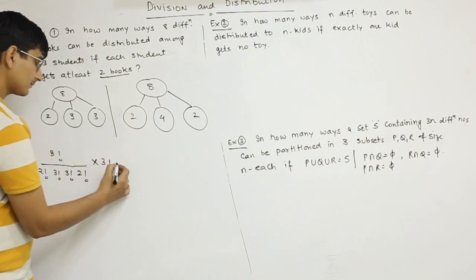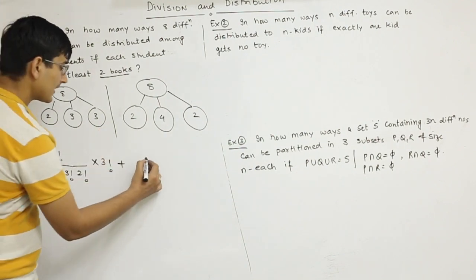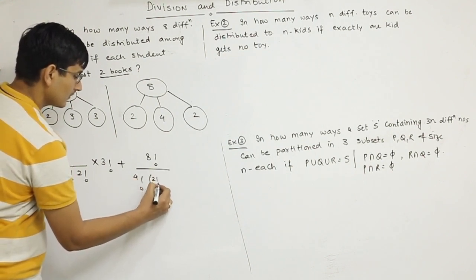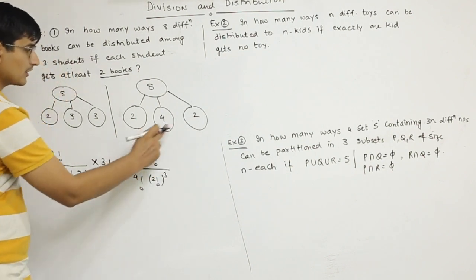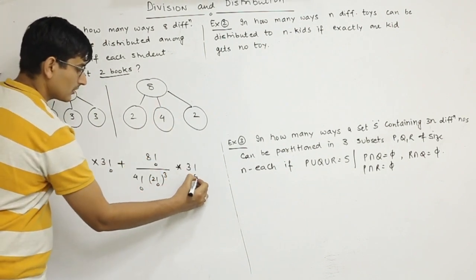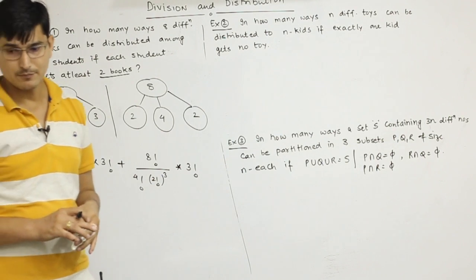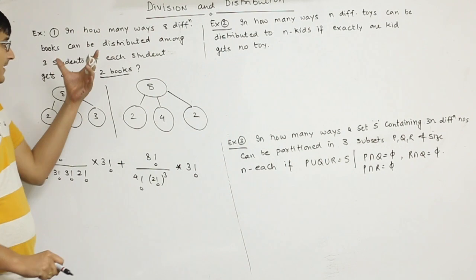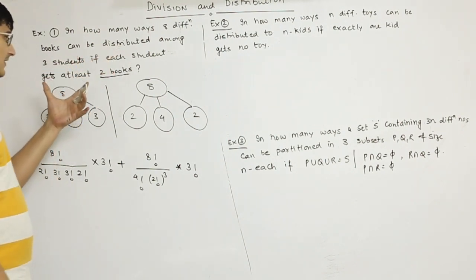Plus eight books, this group size is 2, 2, 4. Two factorial, two factorial because they're the same size, into three factorial. So this will be the number of ways of distributing eight different books among three kids.